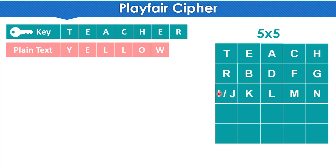I and J are combined and written together. This is because only 25 alphabets can fit and there are 26 total letters from A to Z, so I and J are treated as one. Normally we use I; J is not used separately. So in one box we write I/J. Normally I is used in practice.